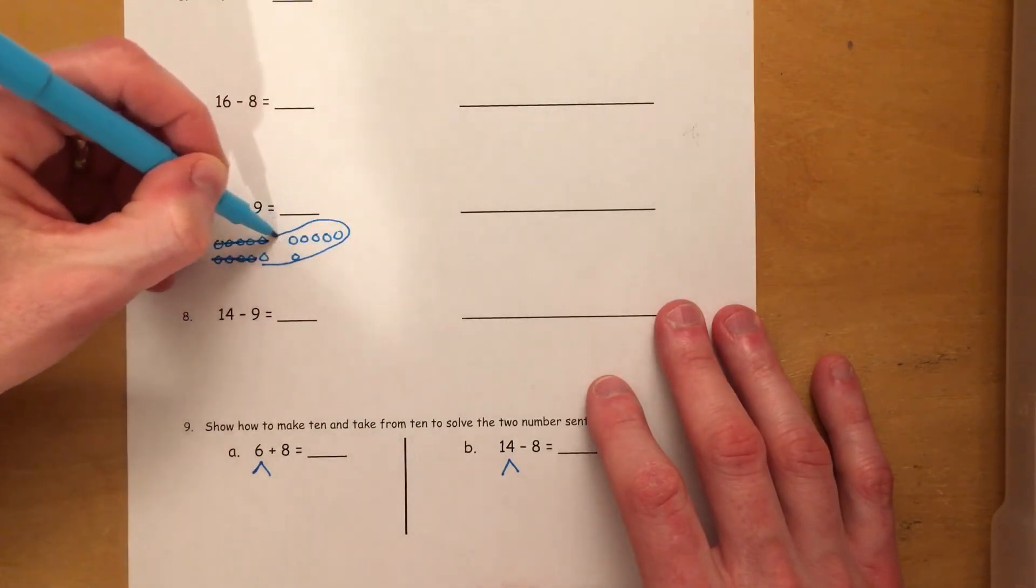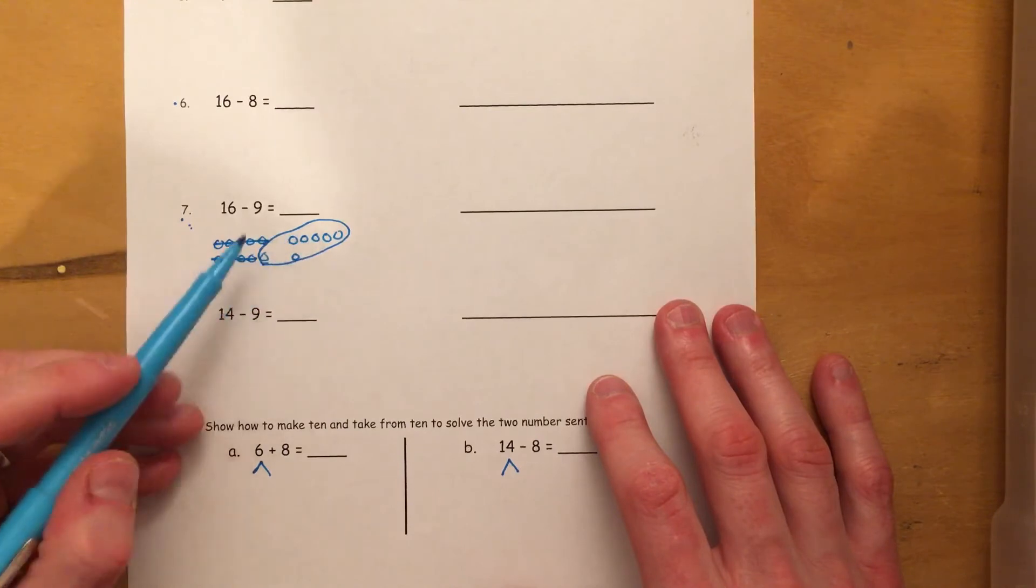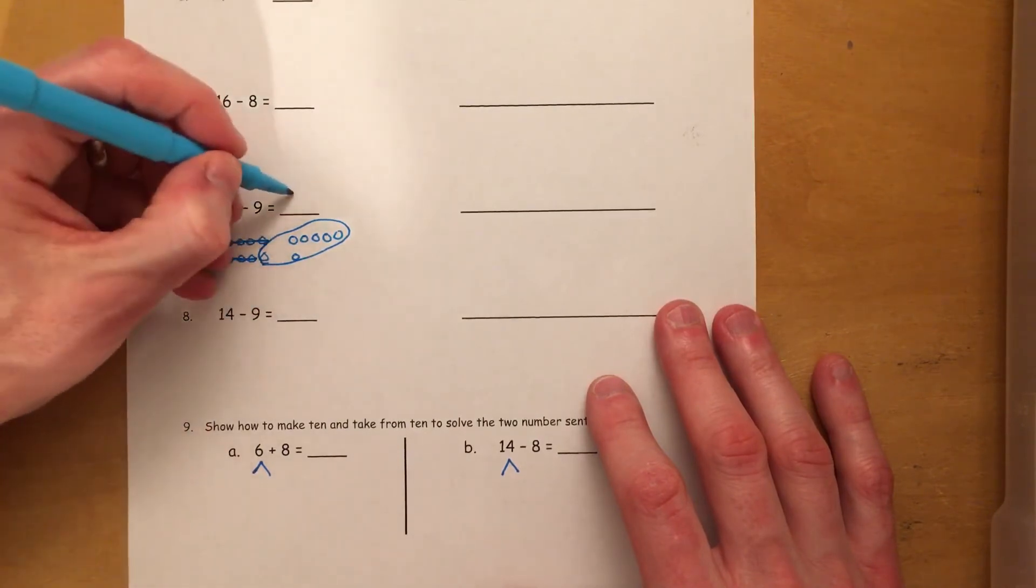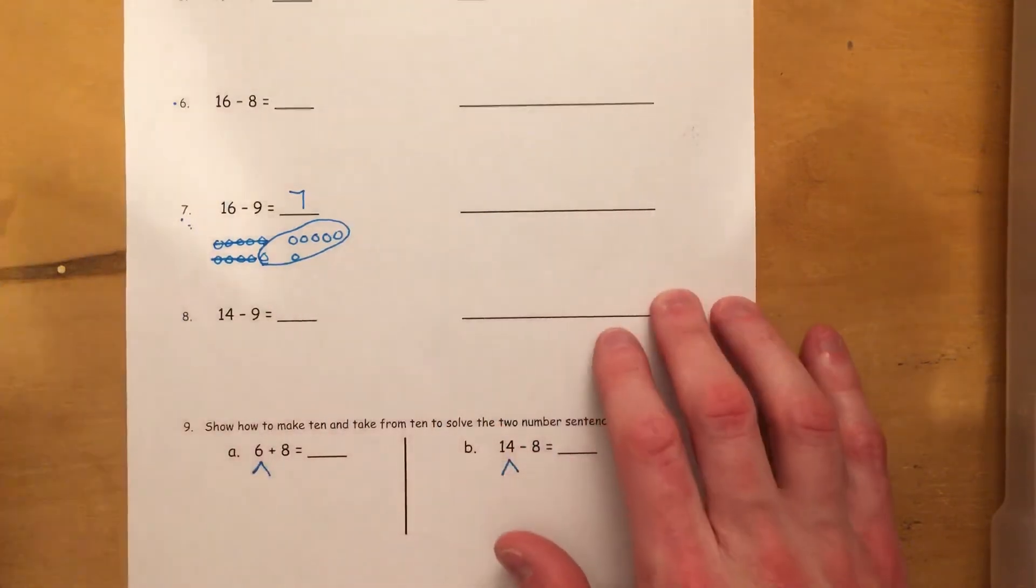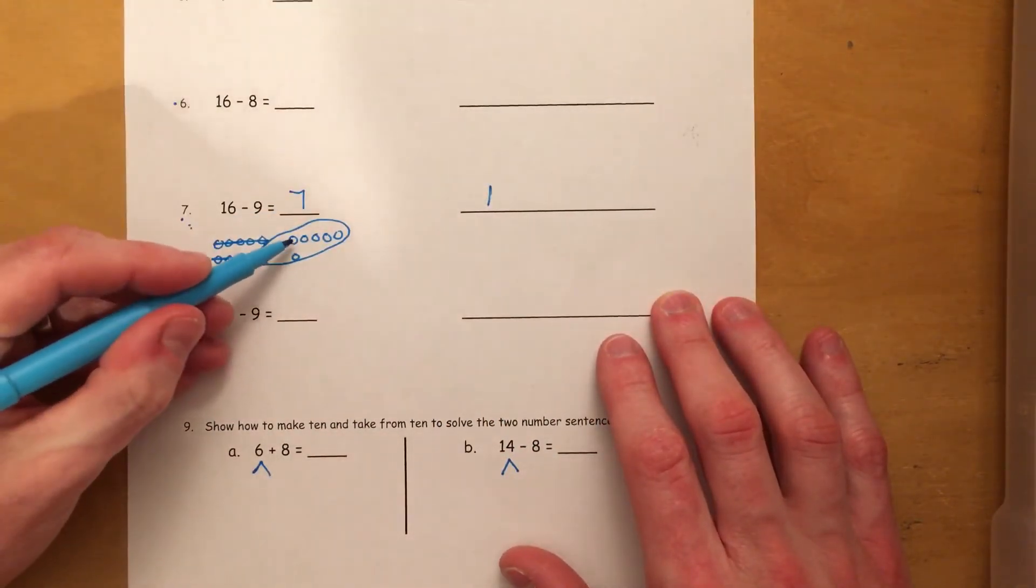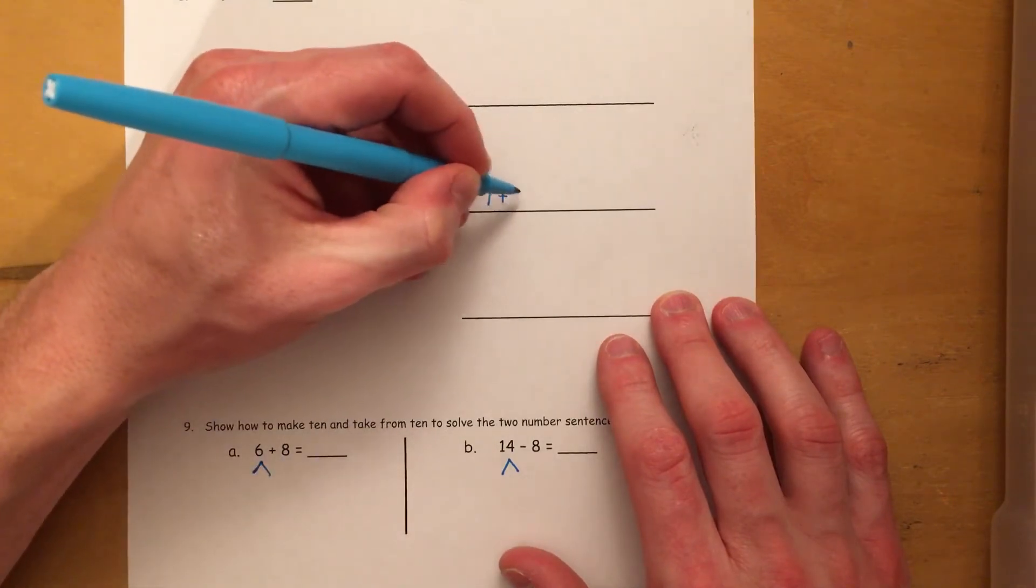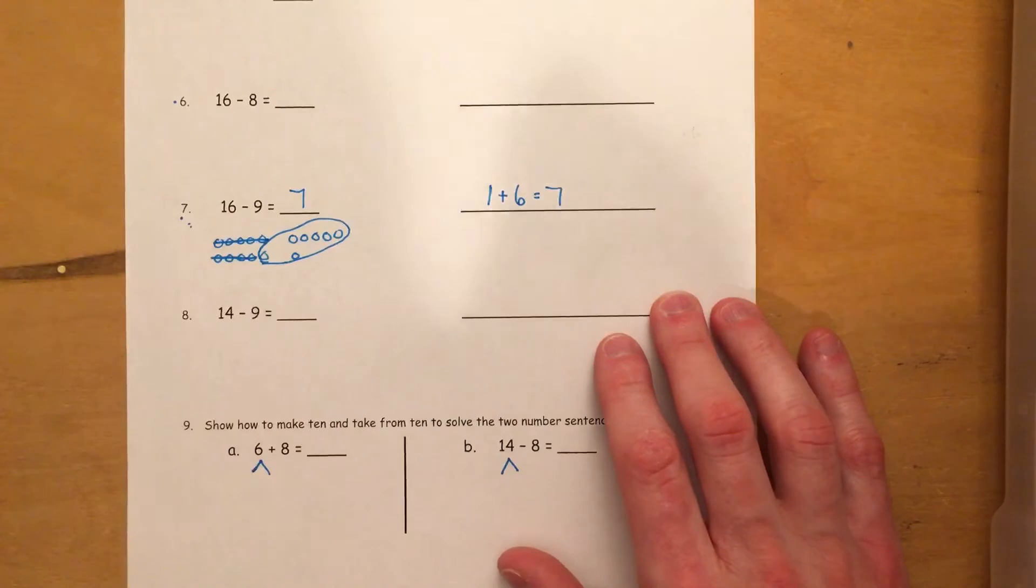So we're going to cross out all but the 1. Then we're going to take these, put them together. So we have 6, 7. But we need to do our addition sentence over here. So I have a 1. So 1 plus 6 equals 7.